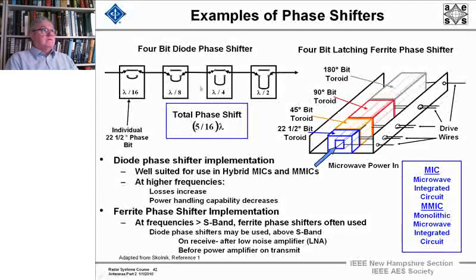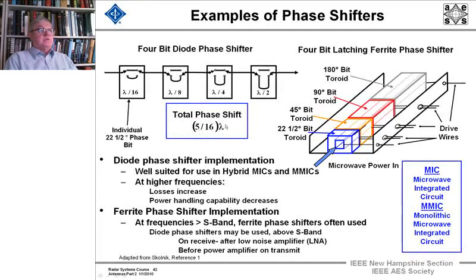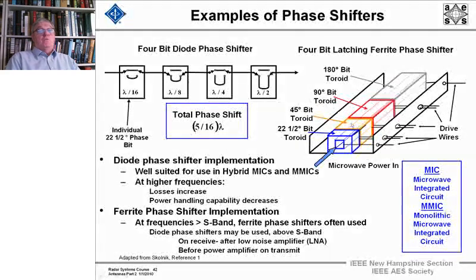Here is a four-bit phase shifter. We have delay lengths of one-sixteenth lambda, one-eighth lambda, one-quarter lambda, and one-half lambda. You just switch in and out these different lengths; the individual phase shifter bit is 22.5 degrees. The total phase shift shown here is five-sixteenths of lambda — this would be called a four-bit diode phase shifter. A four-bit latching ferrite phase shifter flips bits from zero to 180 degrees, with steps of 22.5, 45, 90, and 180 degrees. Drive lines go in, microwave power goes in, and it comes out shifted.